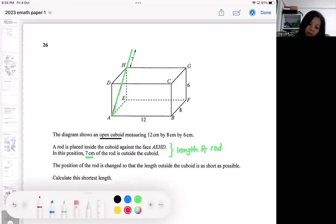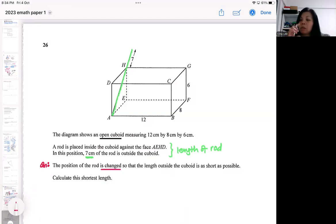Some of you never realized that they are changing the position of the rod. So you need to visualize how the rod is changed so that the length outside the box will be as short as possible.